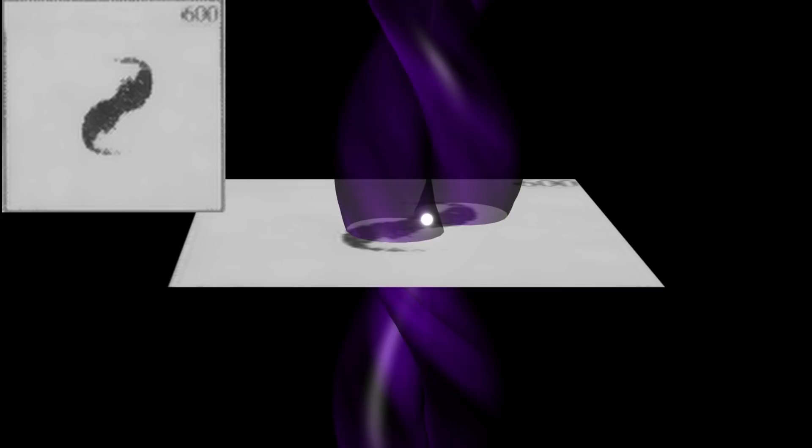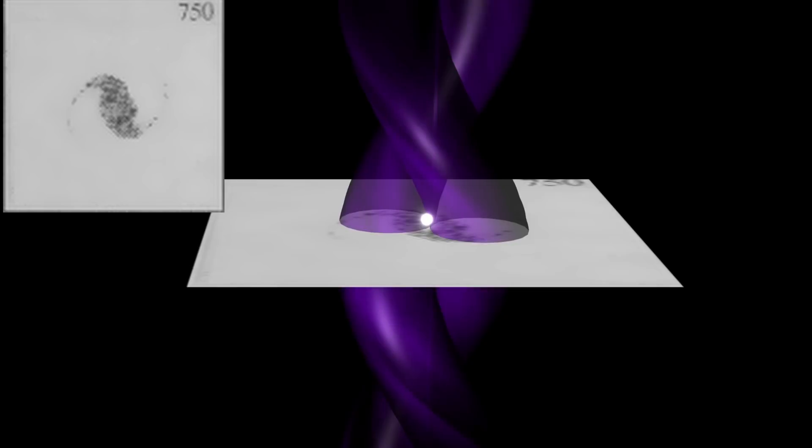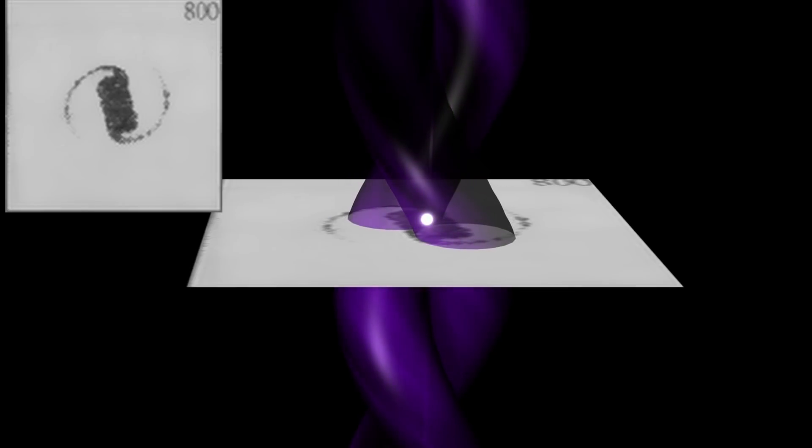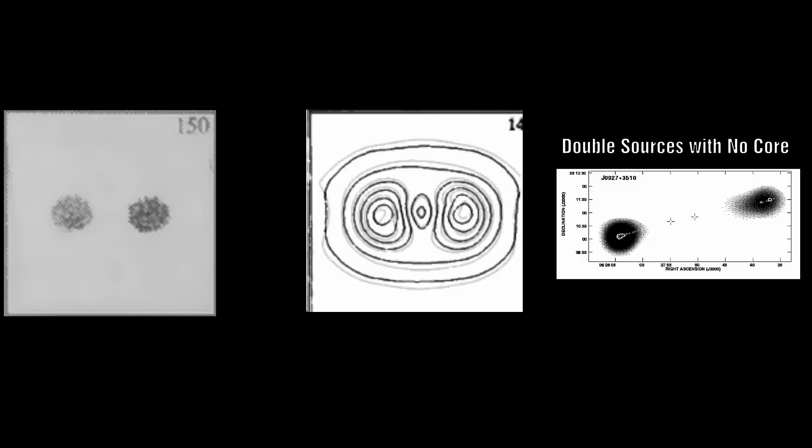Could this model account for the difference between the central bulge and the arms of the spiral galaxy? Now there are still many open questions that this concept has which I have covered in a separate video which I will also link below.